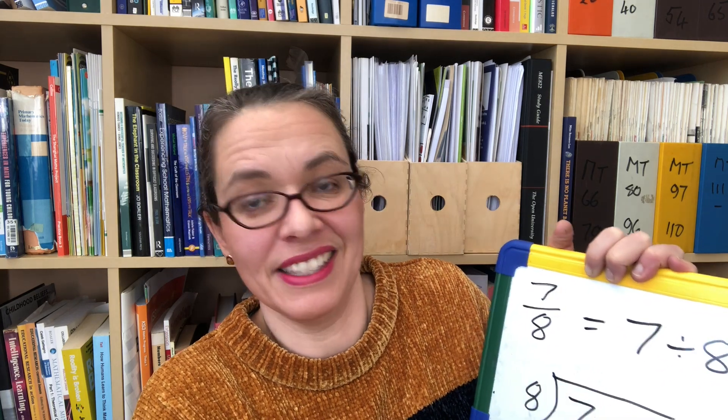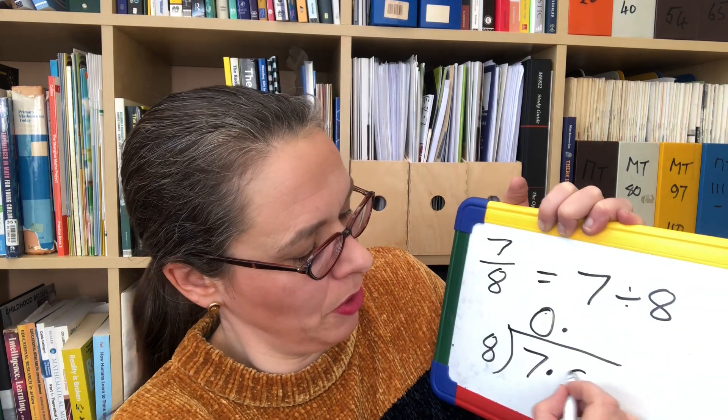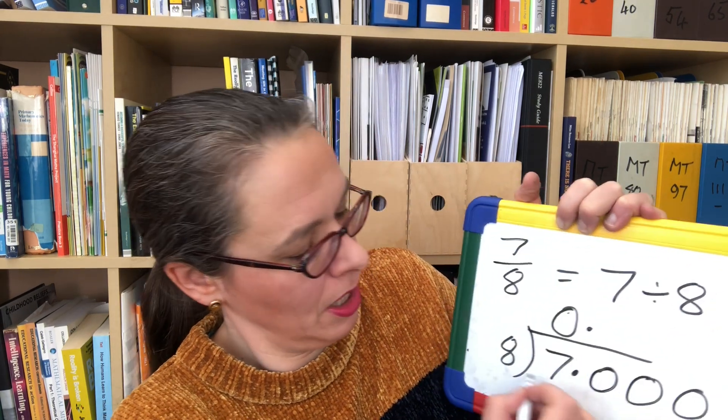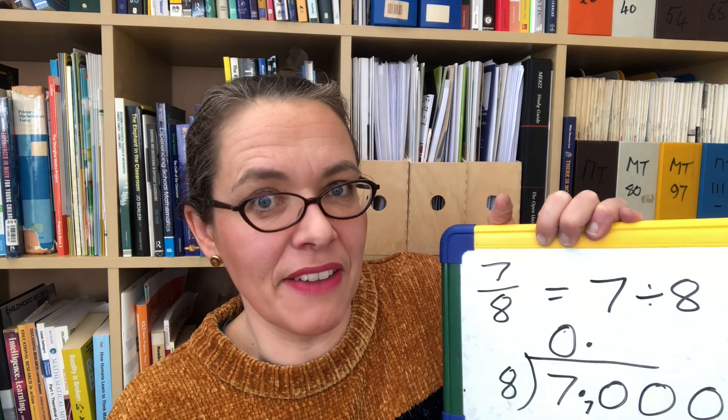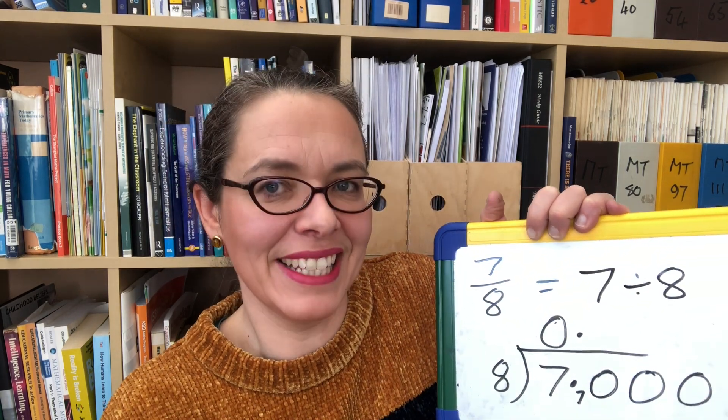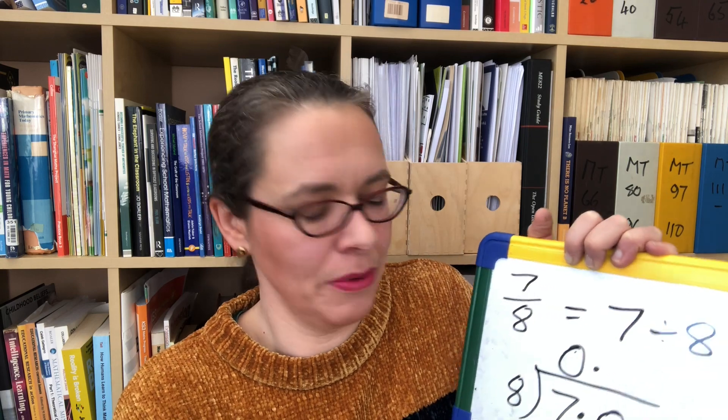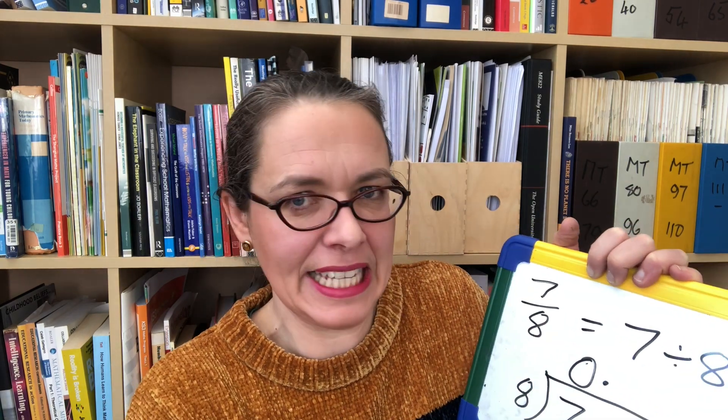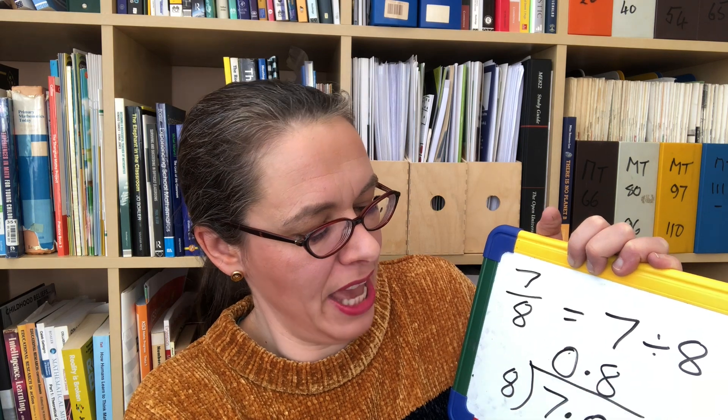Let's try a slightly harder one. What about seven eighths? Seven eighths is seven divided by eight, which we can set up like this. How many eighths in seven? None. So we're going to have to continue beyond the decimal point. I've got seven to carry. How many eighths in 70? Eight eights are 64 — as the mnemonic goes, 'I ate and I ate till I was on the floor.' So we have eight.